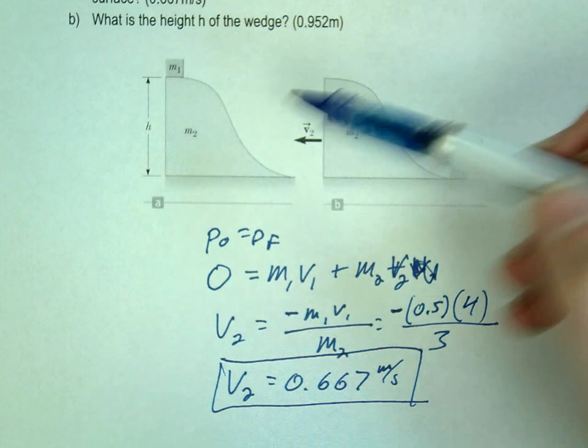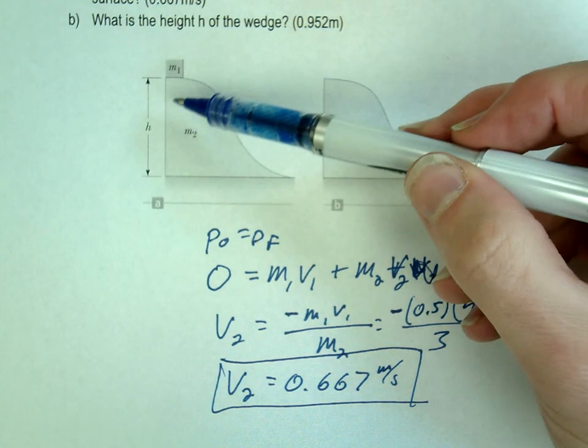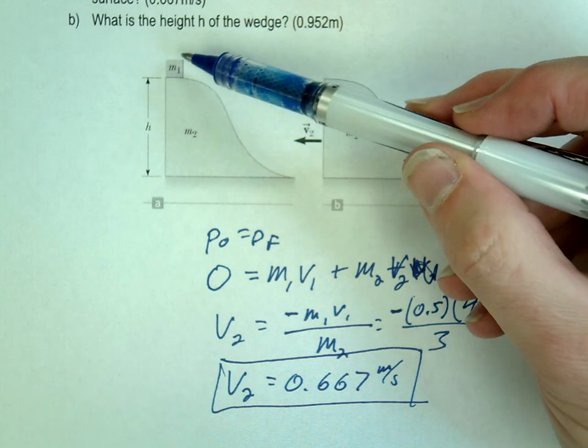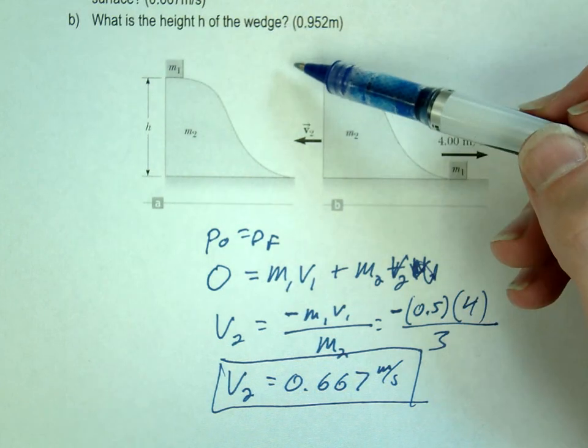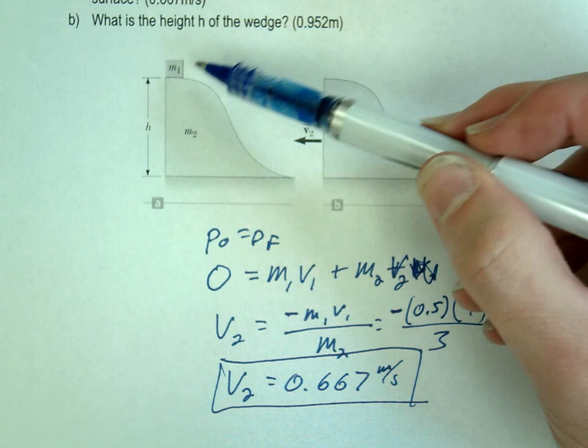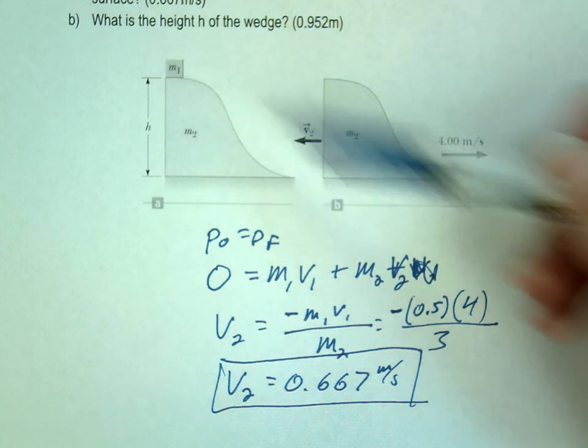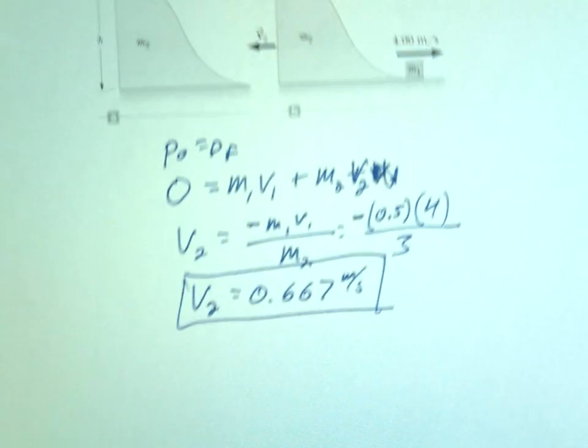Question number two is asking how high was this over here. So for this one, you're going to use conservation of energy to solve this problem. So what kind of energy do we start with? Nothing's moving, so what kind of energy do we start with? Just potential. So this is our potential energy up here, and as it falls, it changes into some kinetic energy.